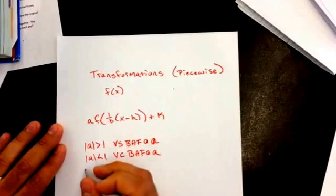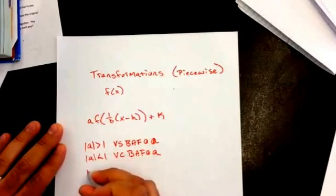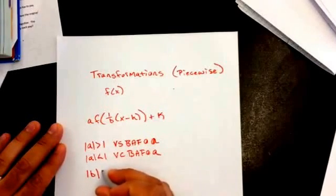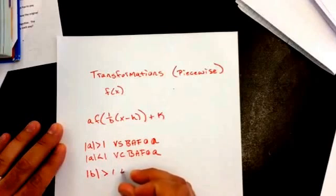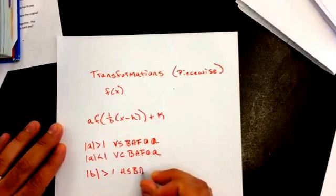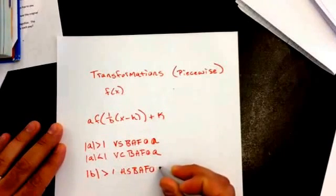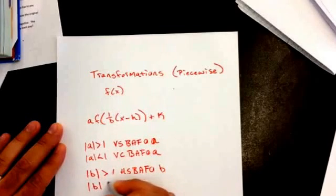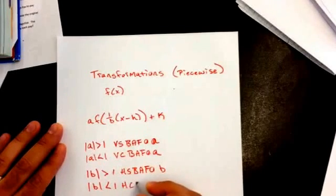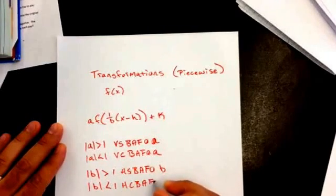Remember that b is our horizontal, so again, absolute value of b is greater than 1, that's a horizontal stretch by a factor of whatever b is. If it's absolute value of b is less than 1, it's a horizontal compression by a factor of whatever b is.